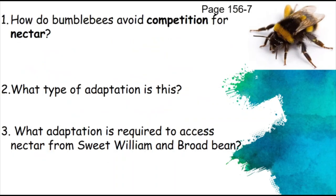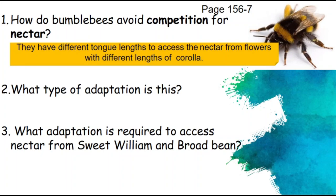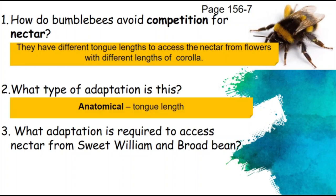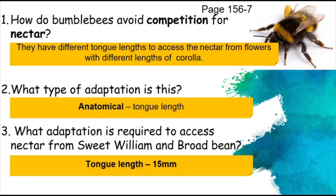How do bumblebees avoid competition for nectar? They have different tongue lengths to access nectar from flowers, which have different lengths of corolla — the length of petals. A bee with a very short tongue cannot access nectar from flowers with really long petals. This is an anatomical adaptation — a physical characteristic that has changed. The adaptation required to access nectar from sweetwilliam and broadbean is a tongue length of at least 15 millimetres.